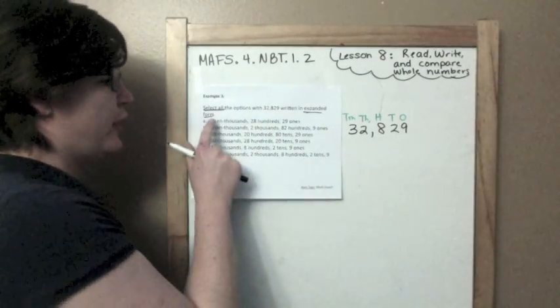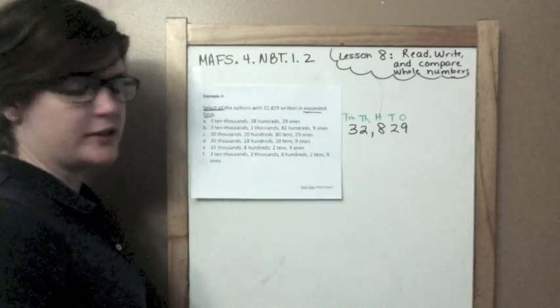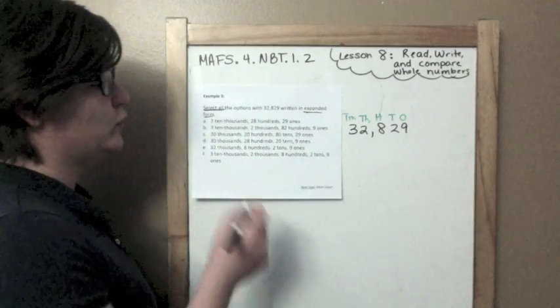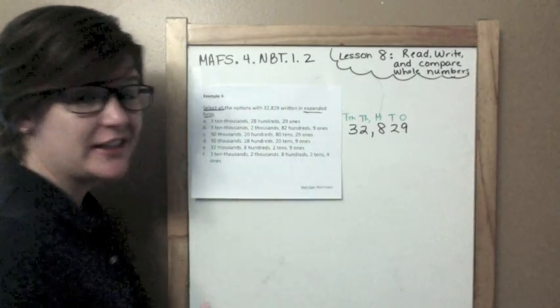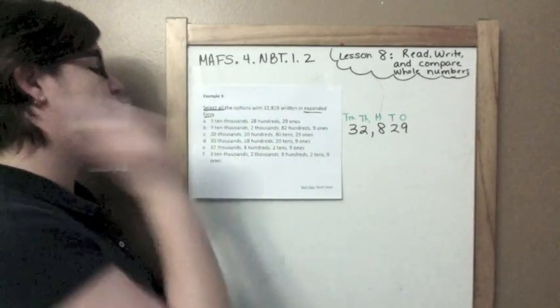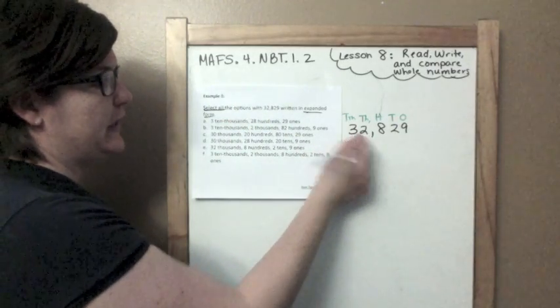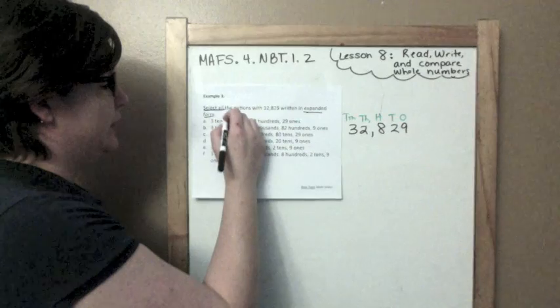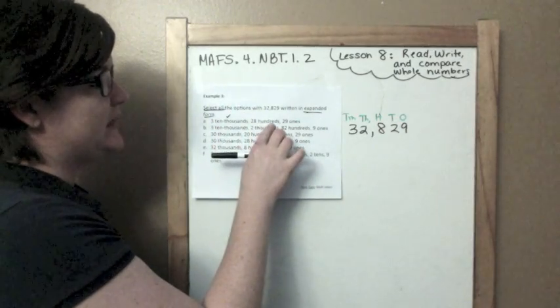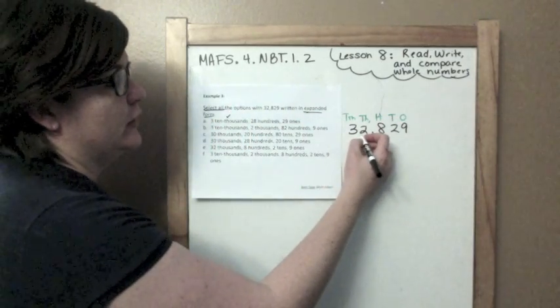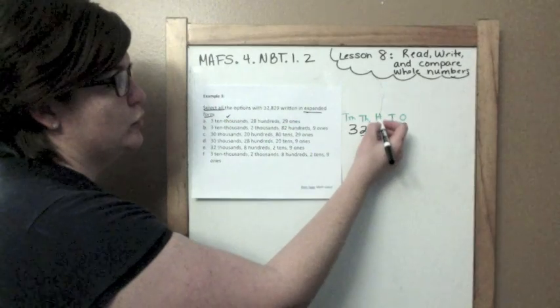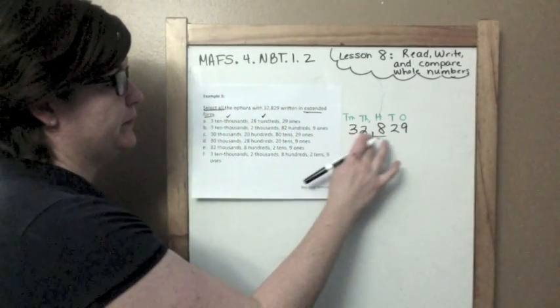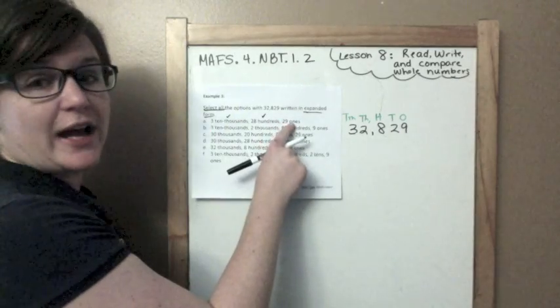Okay? Thousands in the tens thousands place. So, A says 3 tens thousands, 28 hundreds, and 29 ones. Now, you might not have seen it like this before, so listen carefully. Let's start with 3 tens thousands. We have 3 in the ten thousands place. That's correct. Let me check that part. Twenty-eight hundreds.